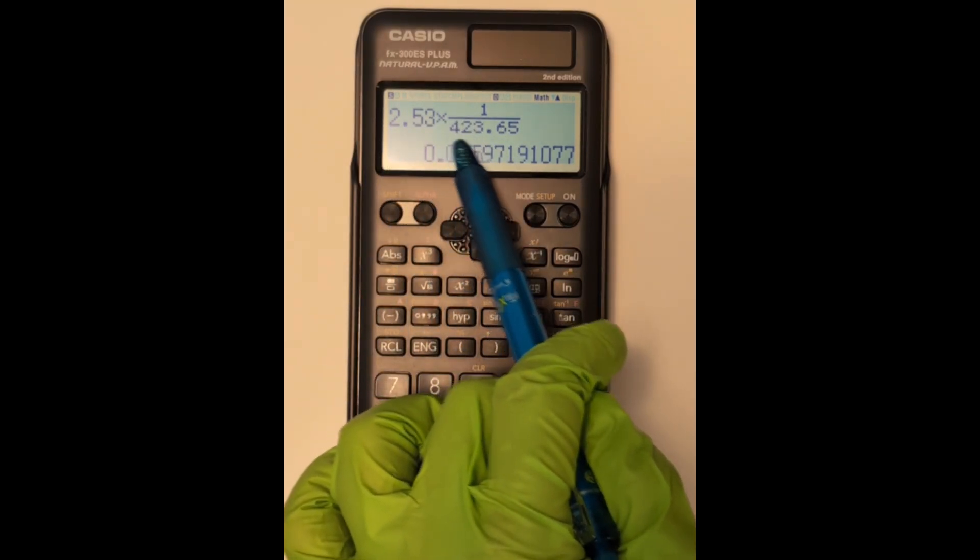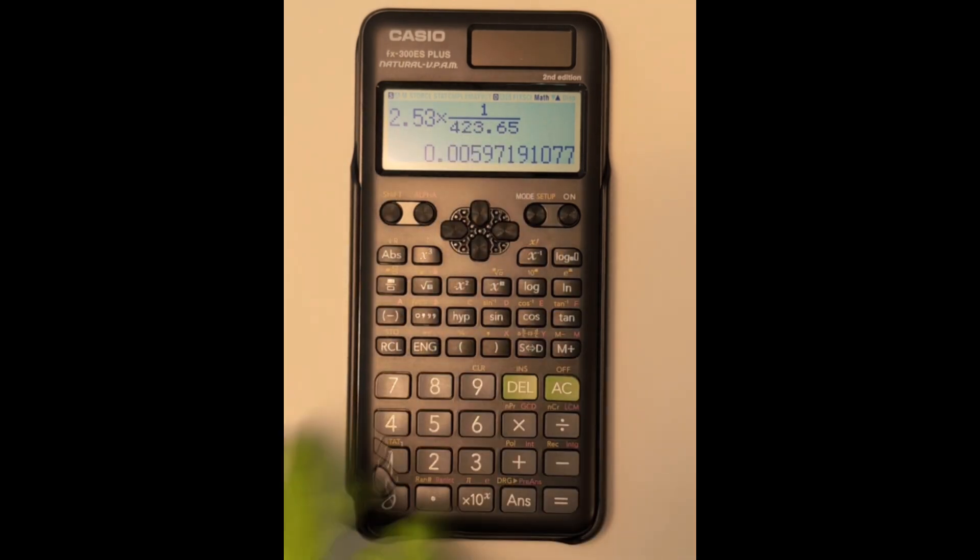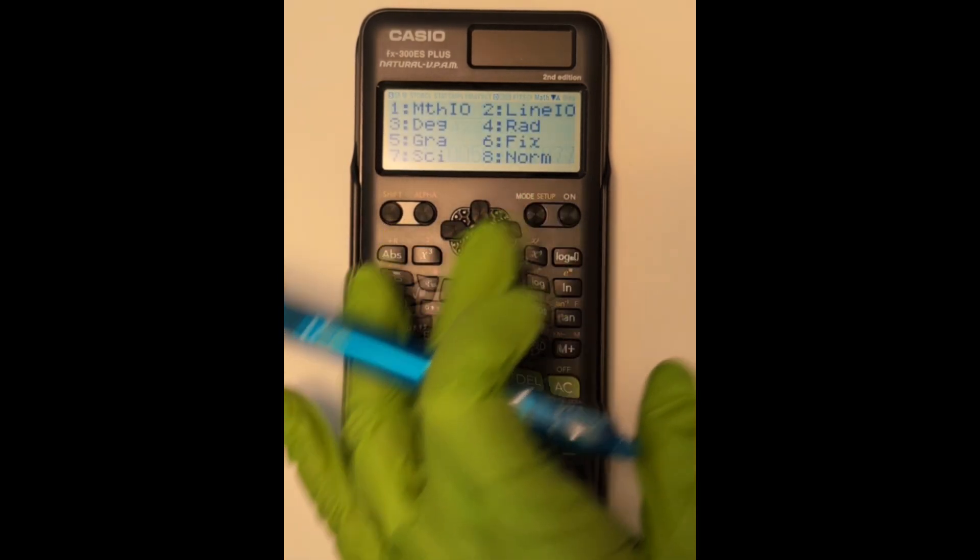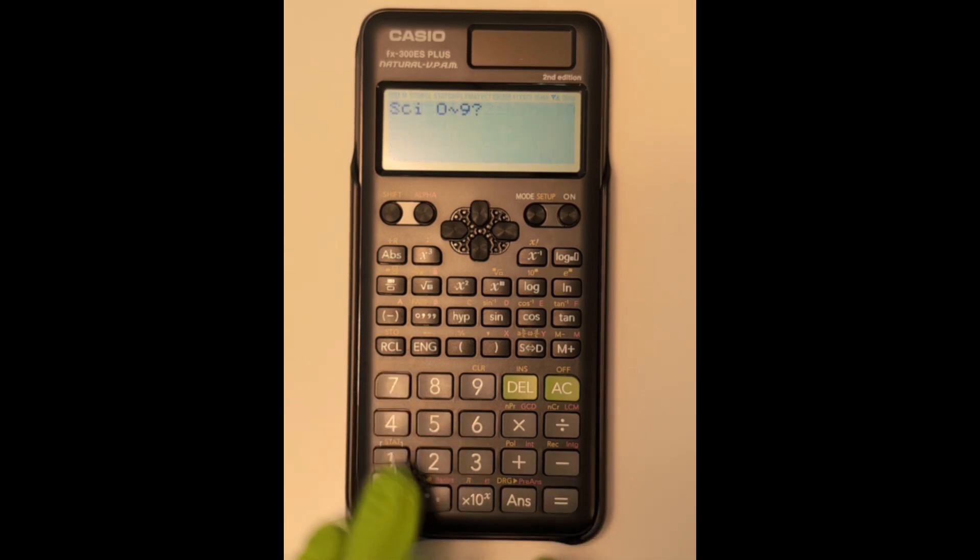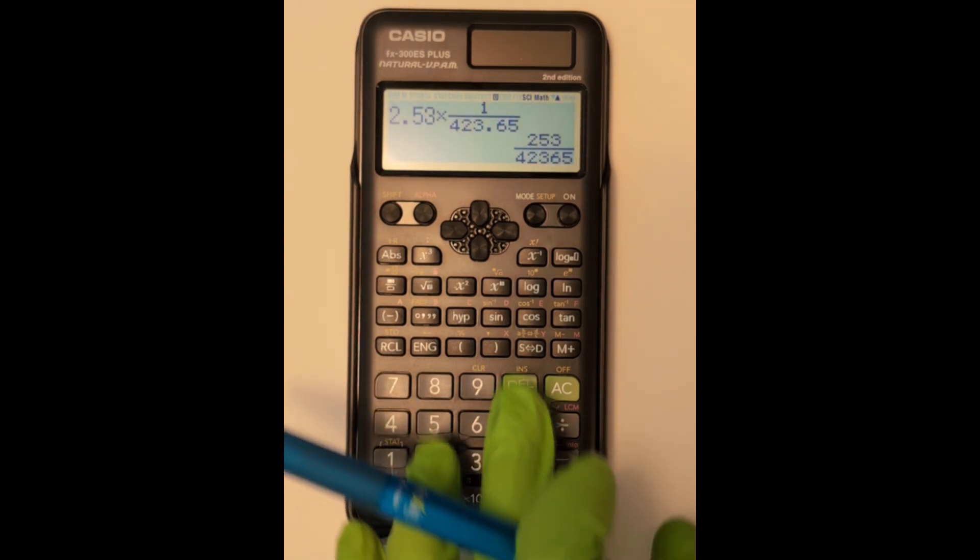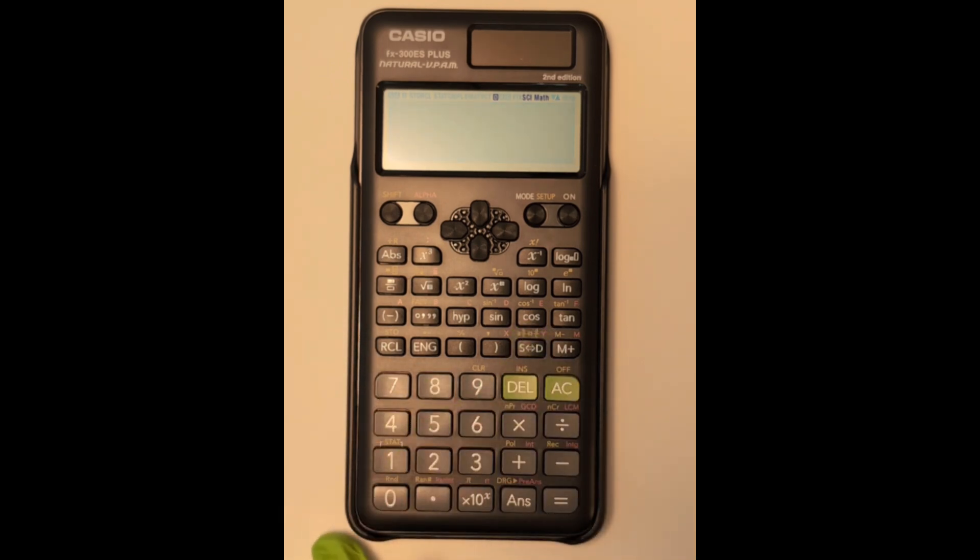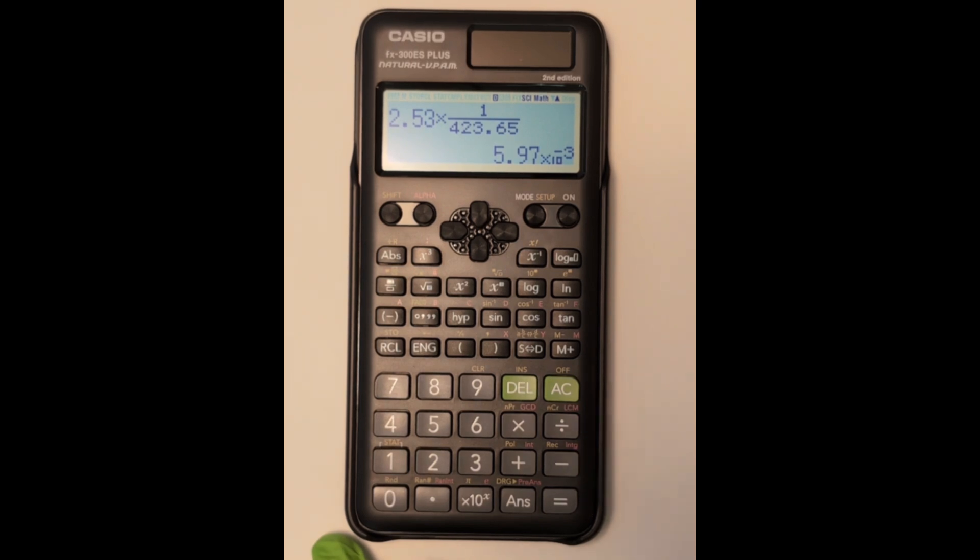So I have three sig figs with my first number, five sig figs with my second. I had already hit the shift button. Now I hit the mode setup. Seven for scientific notation. I know that I need three sig figs with this answer. I hit equals again, SD, and there we go. Now my answer is in scientific notation with the proper amount of sig figs recorded.